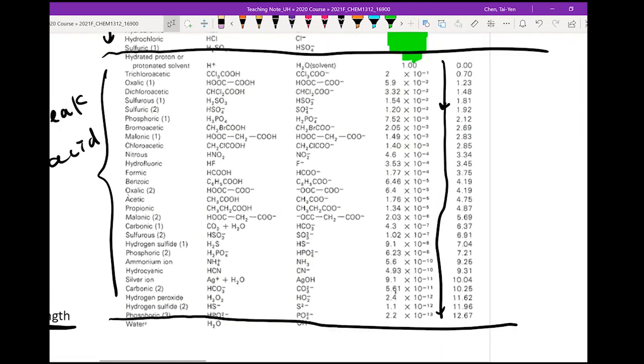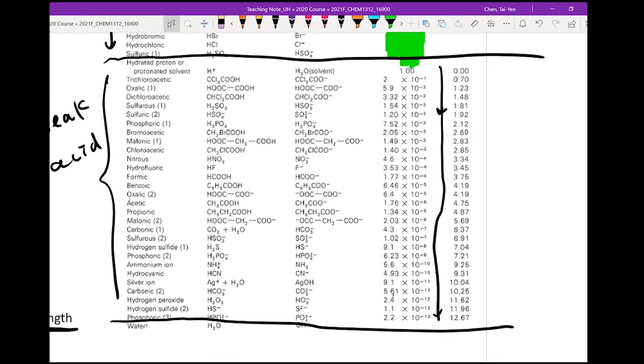Here you can see that Ka goes from 1 to 10^-13. On top is stronger, at the bottom is weaker weak acid.